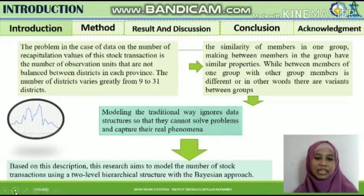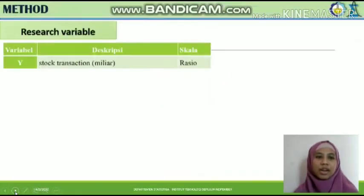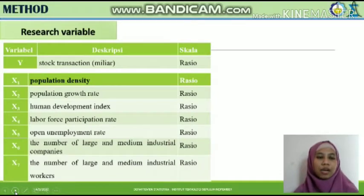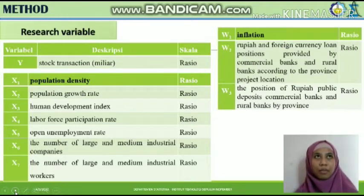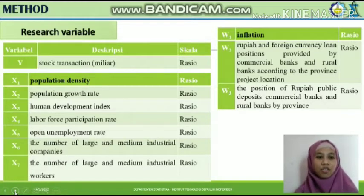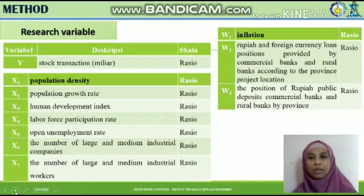Based on this description, this research aims to model the number of stock transactions using a two-level hierarchical structure with a Bayesian approach. The dependent variable is stock transaction, denoted Y. There are two kinds of independent variables: macro and micro. The macro variable is at the second level, which is the province level. The micro variable is at the first level, which is the district or city level. The micro variables are x1 through x7, and the macro variables are w1 through w3.